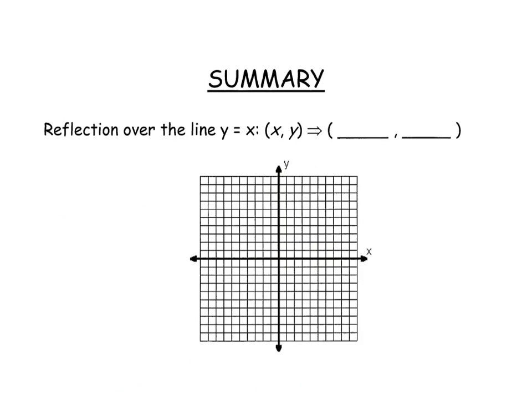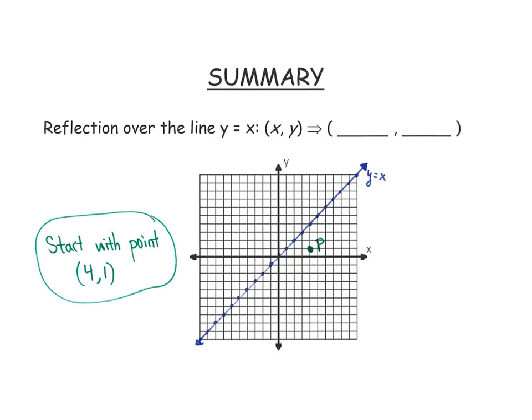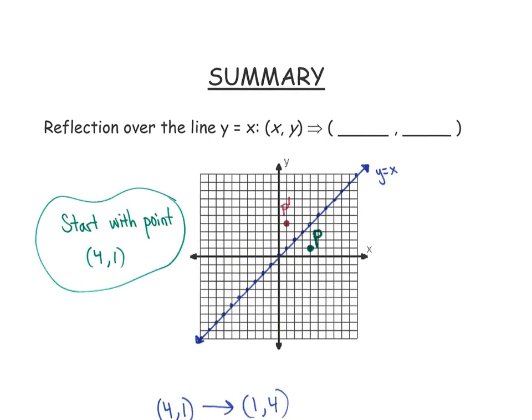Our third rule is you want to start with the line y equals x, and the point 4, 1. And that point p reflected over the x-axis looks like it's going up to 1, 4. The rule there would be I'm taking the x and y values, and I'm switching them.